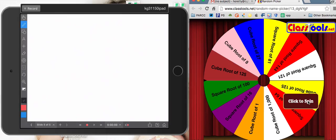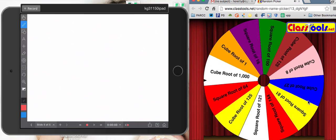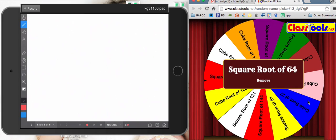Spin the wheel! Let's see what problem we get. Alright, square root of 64.